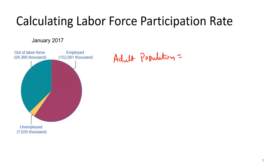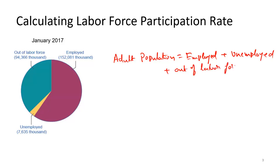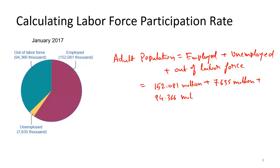Adult population is the summation of employed, unemployed, and out of labor force. So adult population equals 152.08 million plus 7.635 million plus 94.3 million, which sums to 254.082 million.